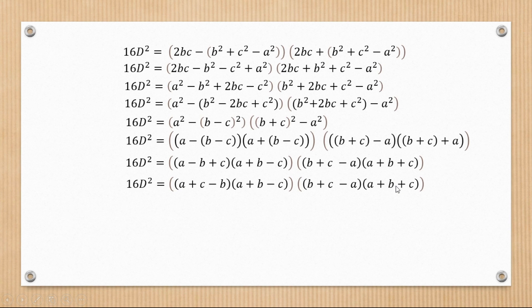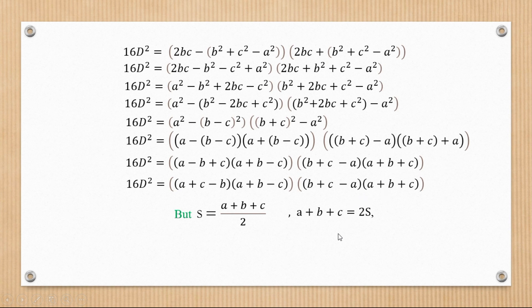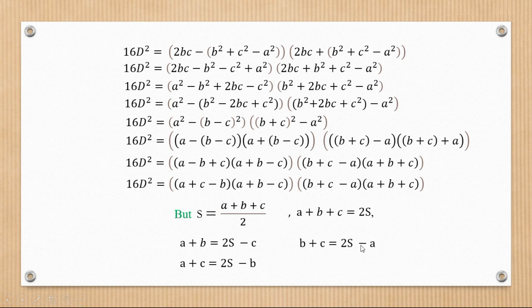Recalling that the semi-perimeter s = (a + b + c) / 2, we can see that a + b + c = 2s. From this we can also derive: a + b = 2s − c, a + c = 2s − b, and b + c = 2s − a. We now substitute these into our expression wherever we see a + b, a + c, and b + c.